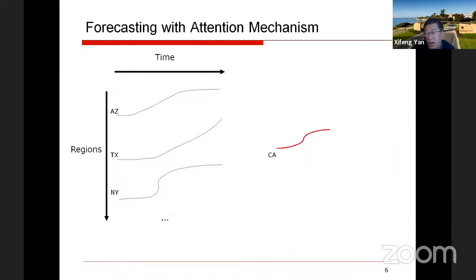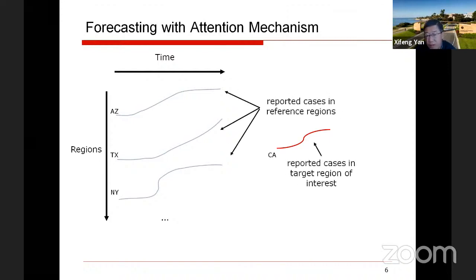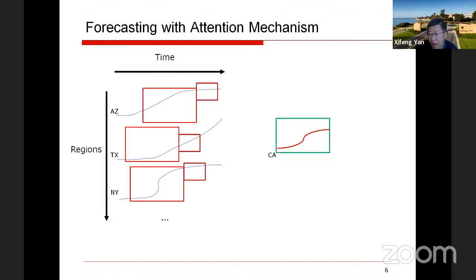This is the intuition behind our model, which is based on the attention mechanism in deep learning — a very successful technique in natural language processing for modeling sequential patterns. Suppose we would like to forecast new cases in California. What we do is refer to similar situations in other states across the United States, regarding those states as reference states. We compare the current window in California with historical windows in different states, try to find those historical windows that share a similar trend, and then use the follow-up trend to forecast future cases in California.